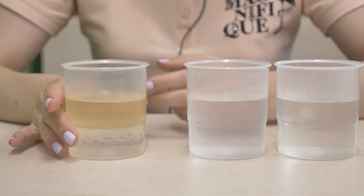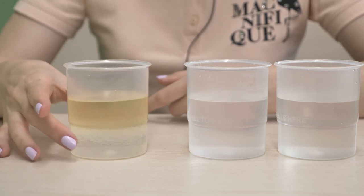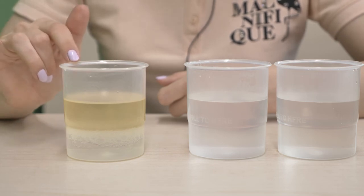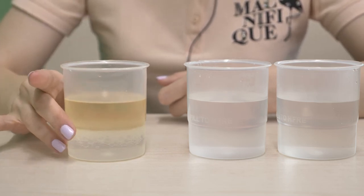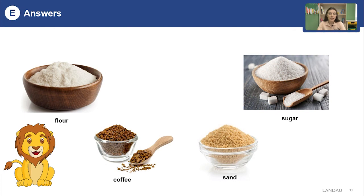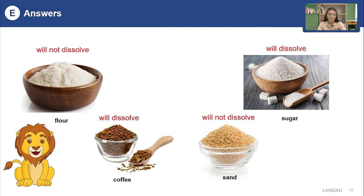Now the third cup — there was oil. As you can see, the oil is floating on the top of the water and it doesn't seem to disappear. It's still visible, so it didn't dissolve. Now let's check your answers. Flour will not dissolve. Sand will not dissolve. Sugar will dissolve. Coffee will also dissolve. And as we understood from our experiment, oil, pepper, and sand are insoluble substances — they didn't dissolve in water.